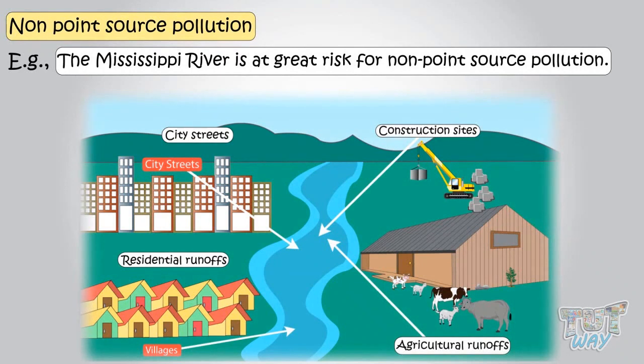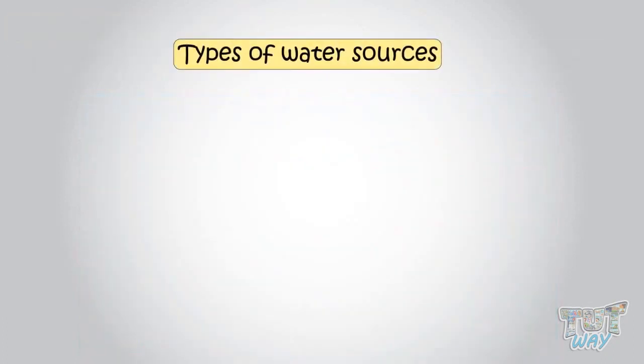We learned types of water pollution now. Let's learn types of water sources. Water sources can be divided into surface waters and groundwaters.